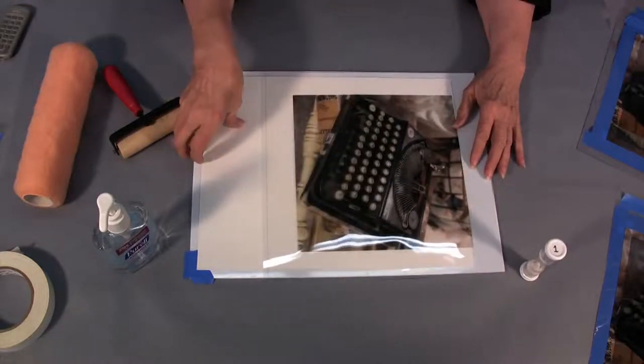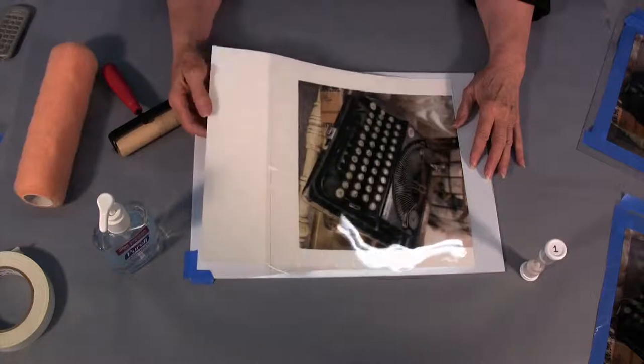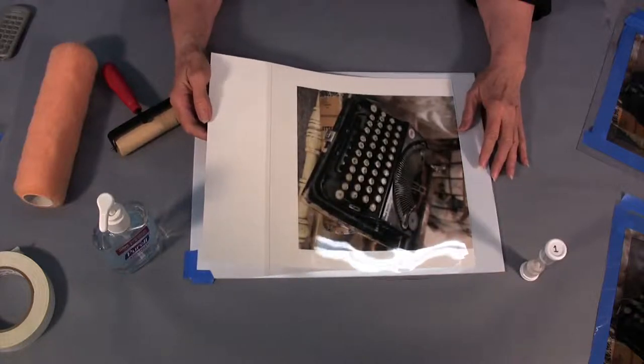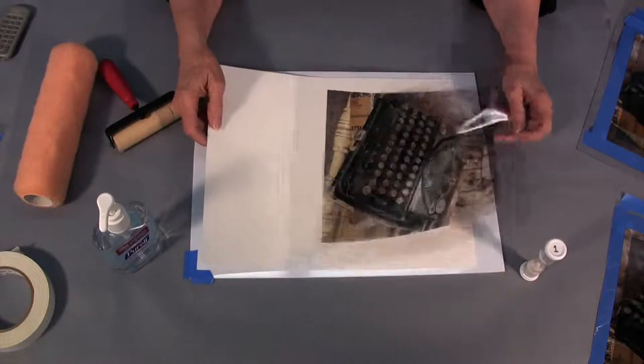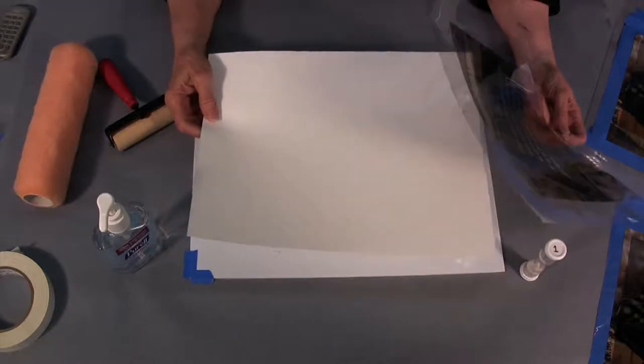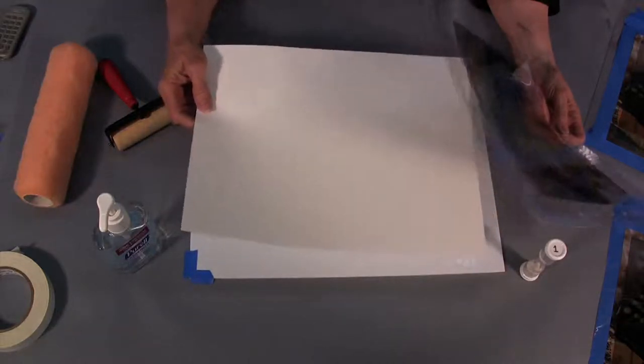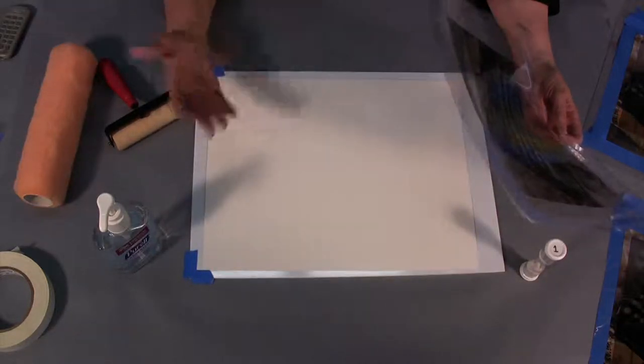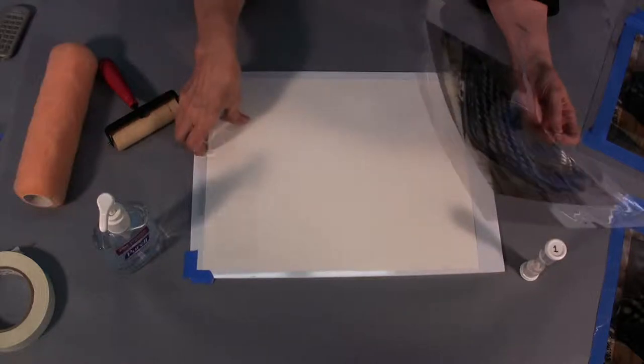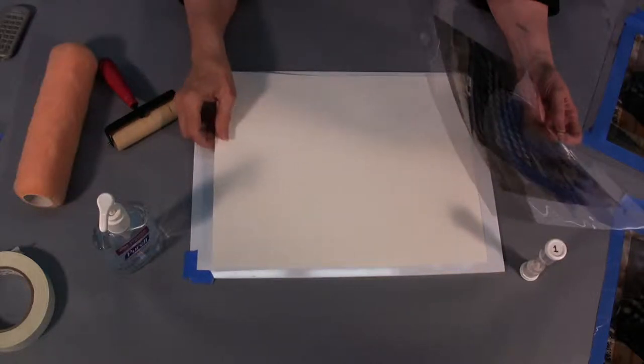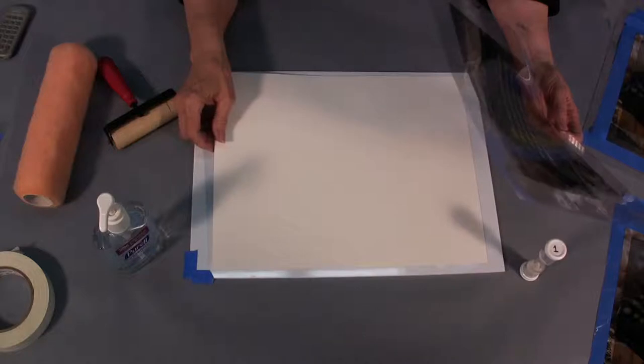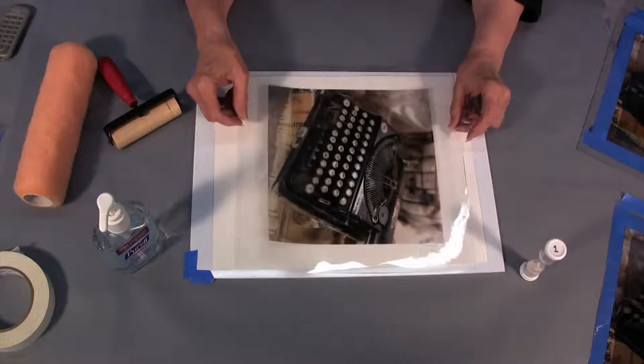The paper that we transfer to is Arches 88. It is a printmaking or silkscreen paper. It is water leaf which means there's no sizing in it. If you left this in water it would begin to fall apart. The papers that are like Arches watercolor papers have a lot of sizing and so this process does not work well for those.